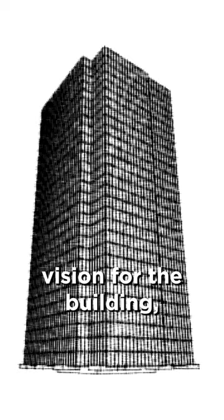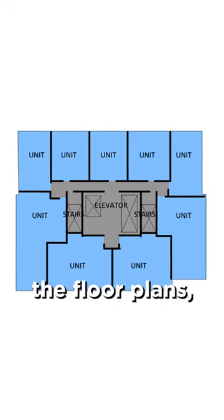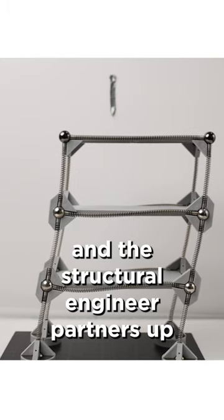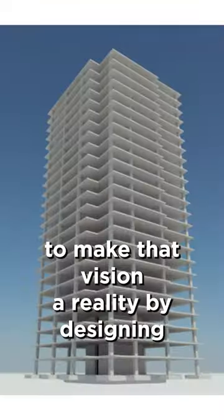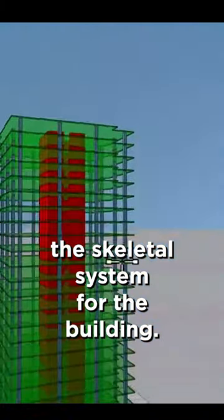The architect has the vision for the building, how it's going to look on the exterior, the shape of the building, the floor plans, what the spaces are going to be used for, and the structural engineer partners up with the architect to make that vision a reality by designing the skeletal system for the building.